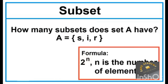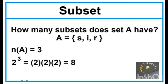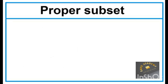To find the number of subsets, use the formula 2 to the power of N, where N is the number of elements. The cardinality of Set A is 3, so 2 to the power of 3 is 2 × 2 × 2 = 8.